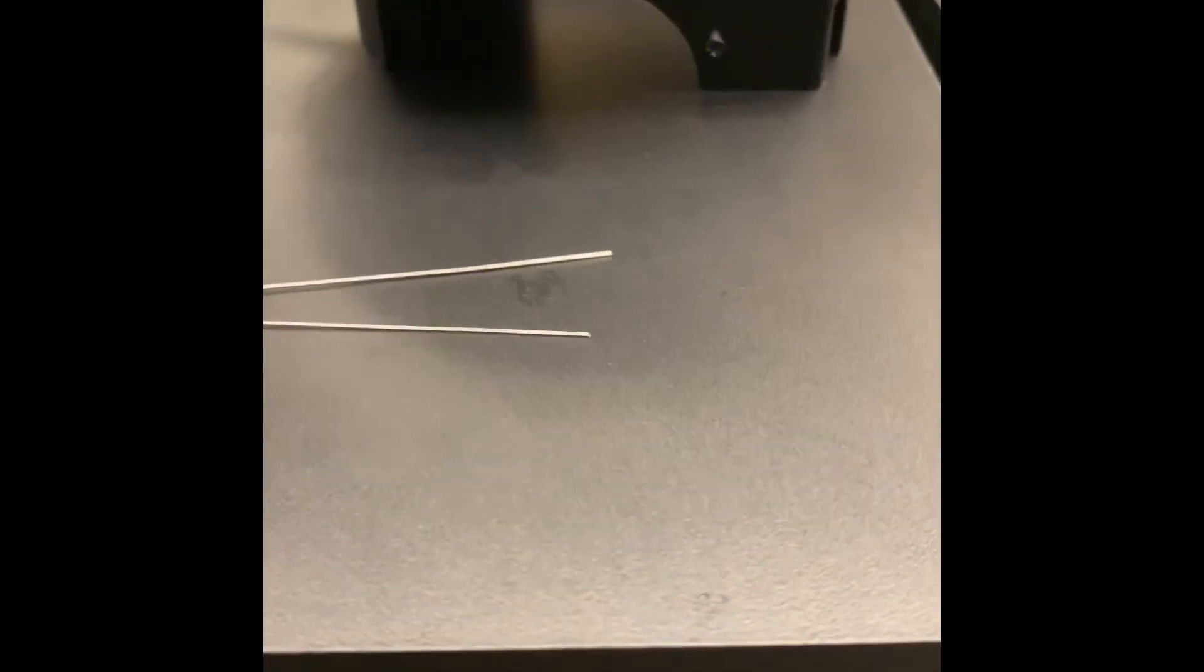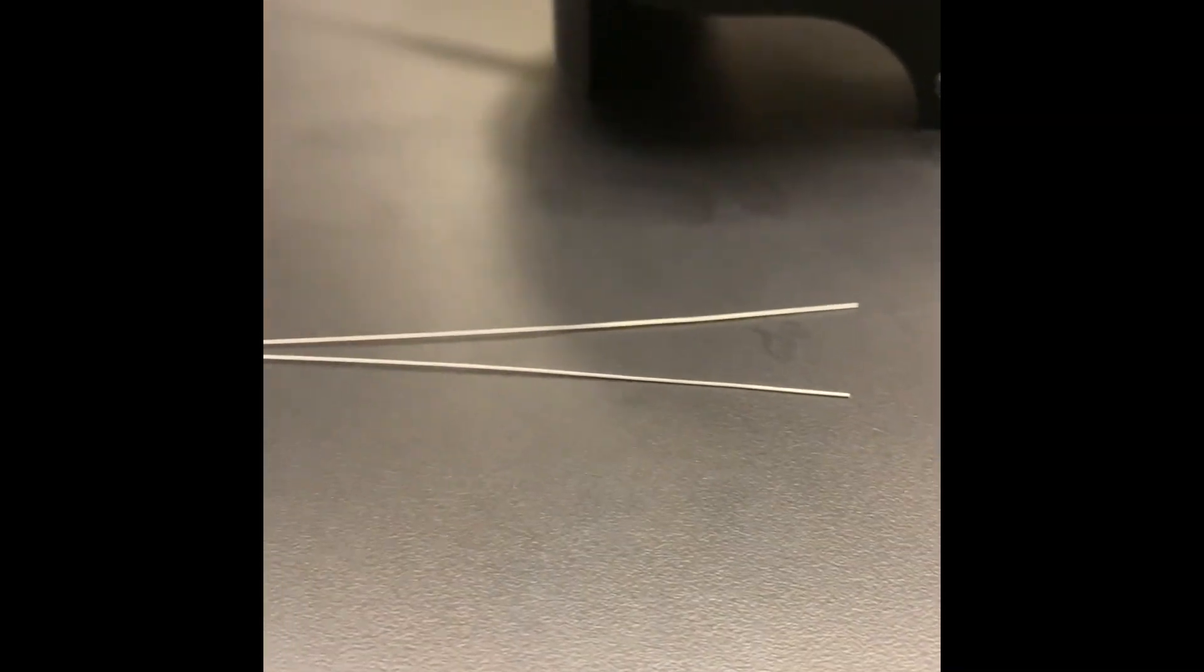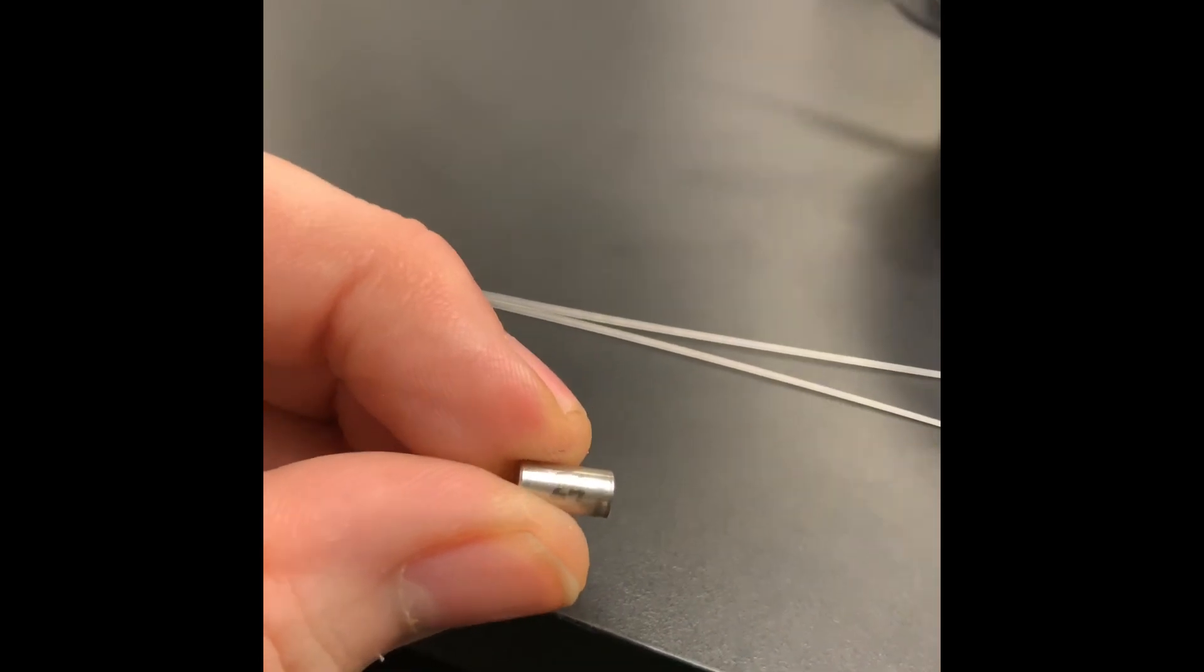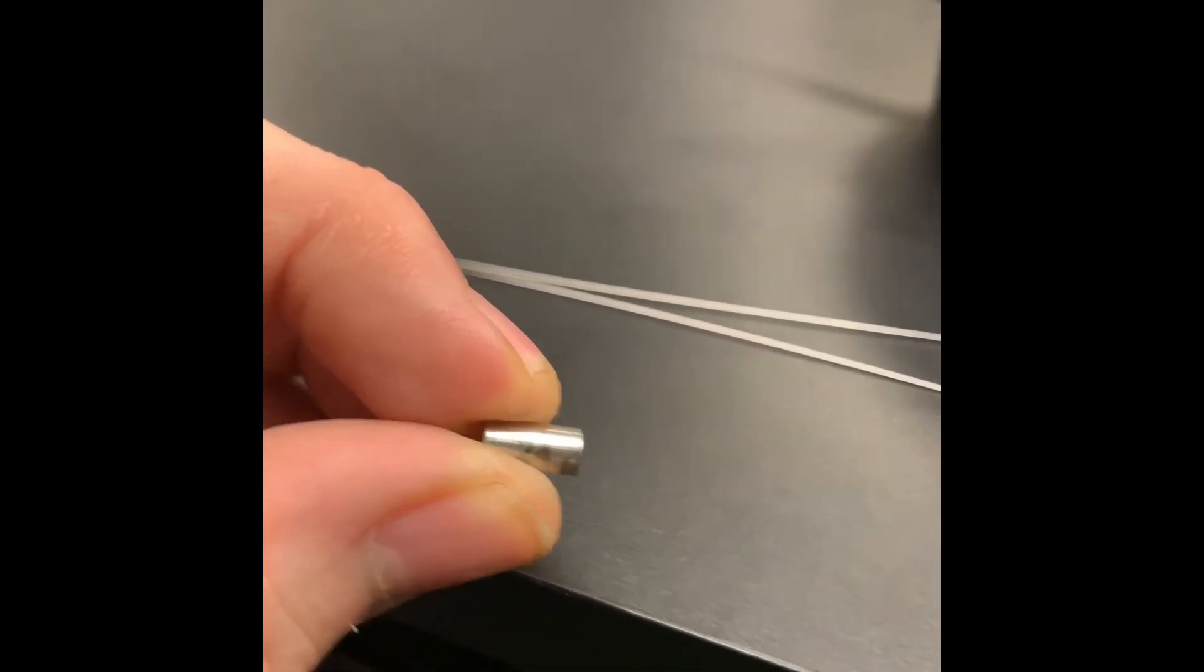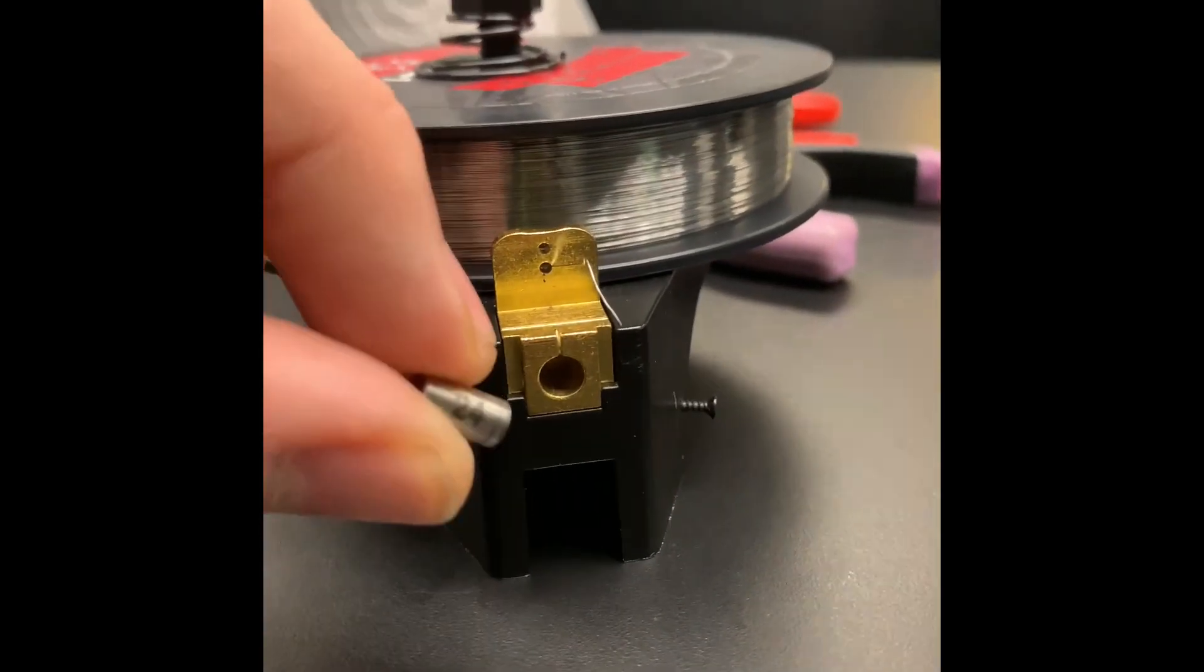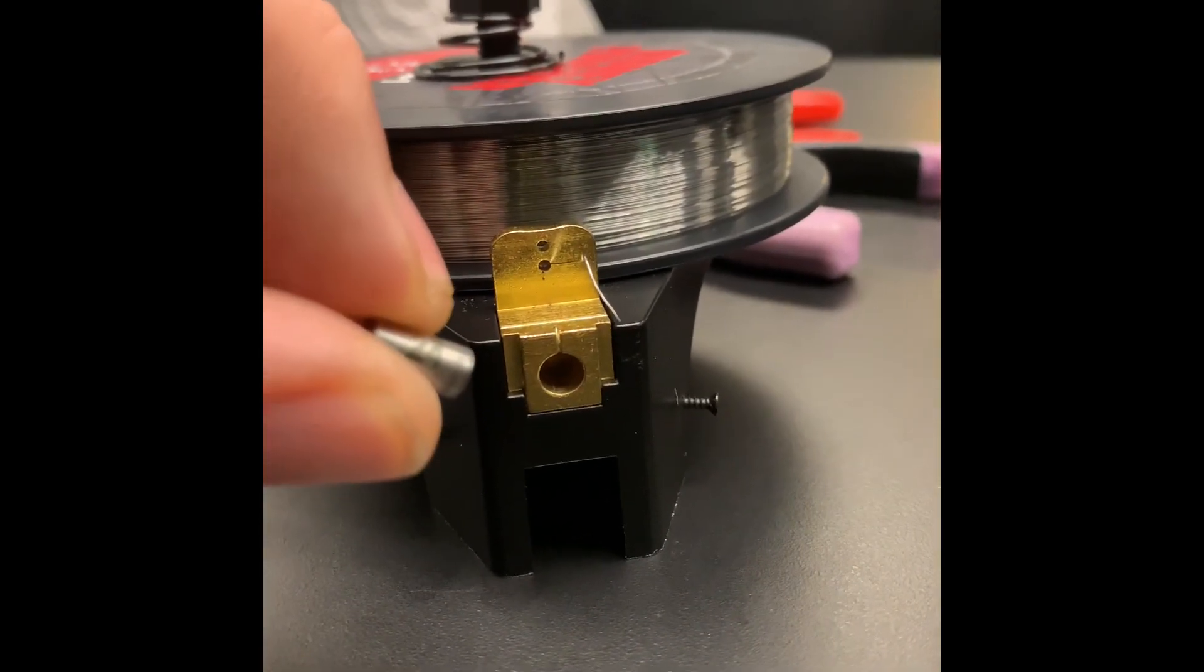So first off we have a couple pieces of 24 gauge wire right there and I'm going to be using the insert that's the 24 gauge insert right there. The insert is going to go into the hole right here. This is going to hold my wires flat and straight while the Clapton wire is going over top of it.